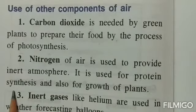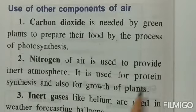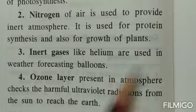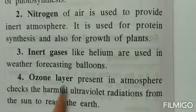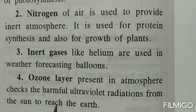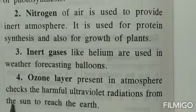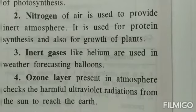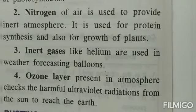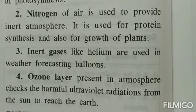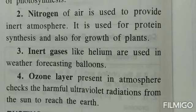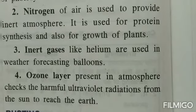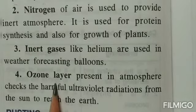Inert gases like helium are used in weather forecasting balloons. The ozone layer present in the atmosphere helps to check harmful ultraviolet radiations from the sun from reaching the earth. Sunlight carries harmful ultraviolet rays, and if too many are allowed to reach the earth, they cause various diseases and even skin cancer. The ozone layer stops them from entering our earth.